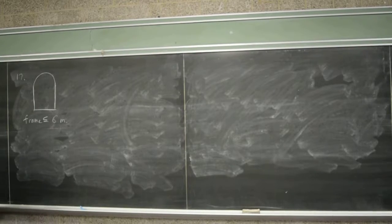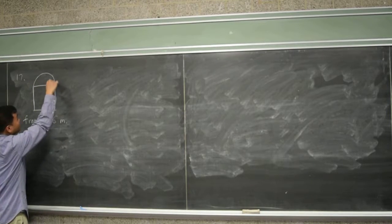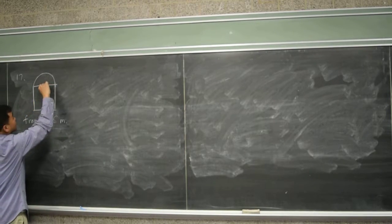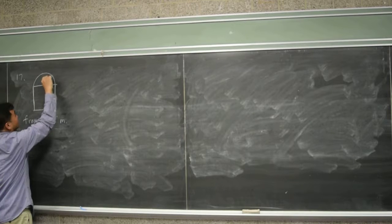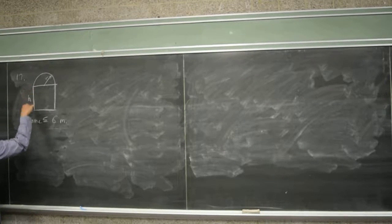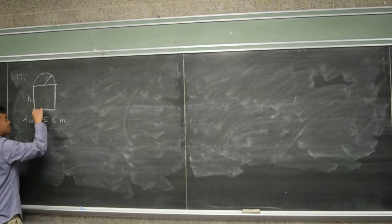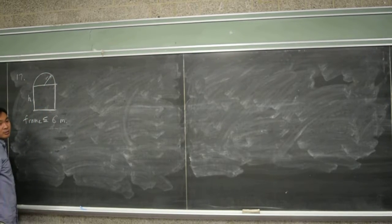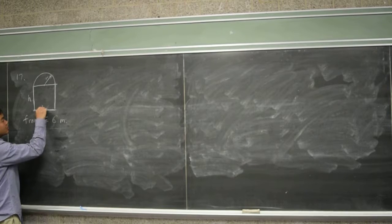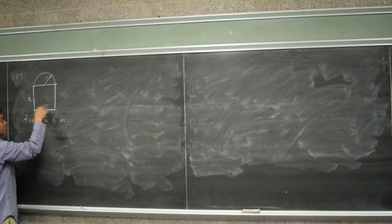Now, because they want us to model this as a semicircle and a rectangle, they gave us two things. One is the radius of this semicircle and then height, h, of this rectangular part. Now, if this is the radius, what's this length? 2R. It'll be 2R, right? Because this is r, that's r, so diameter is 2R, therefore this should be 2R.